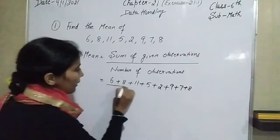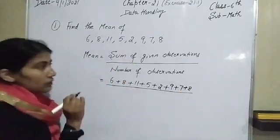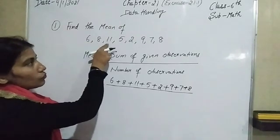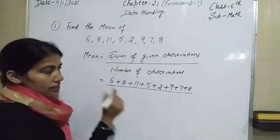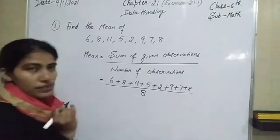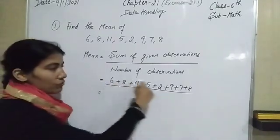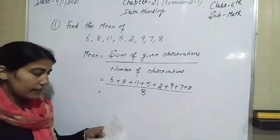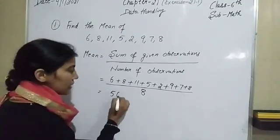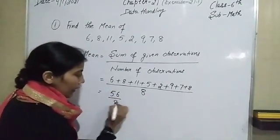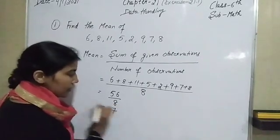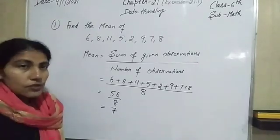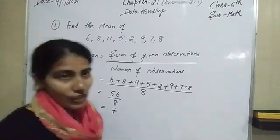Divided by the total number of observations — 1, 2, 3, 4, 5, 6, 7, 8 — that means 8 numbers in total. When you add all these observations you will get 56. Divide it by 8 — 8 sevens are 56 — so the mean of this given observation is 7. Let's start the next question.